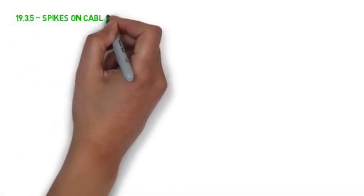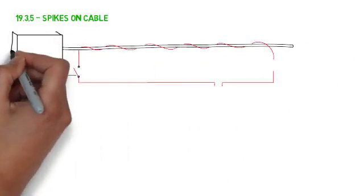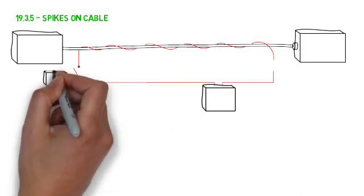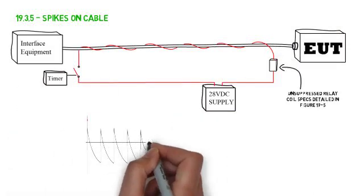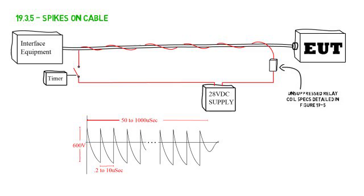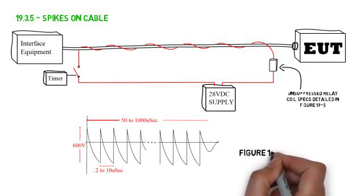Lastly, spikes induced on the interconnecting cable is run using the setup shown. The setup in DO-160 shows a 28-volt power supply. However, the only requirement is that the signal achieved complies with figure 19.6 of DO-160.